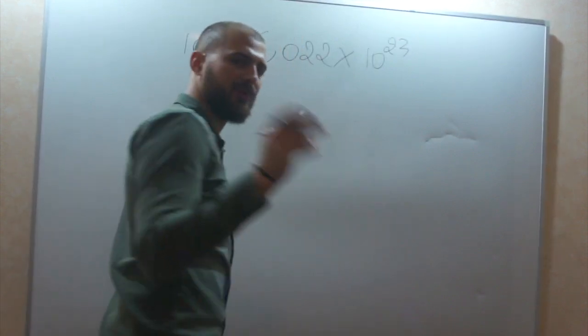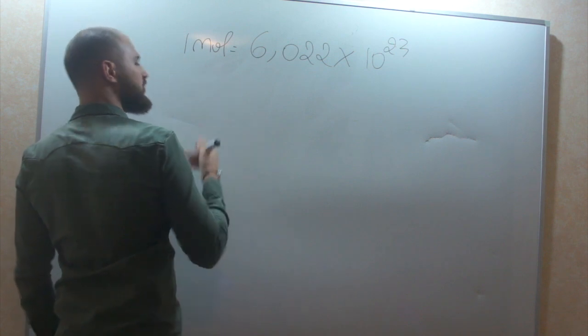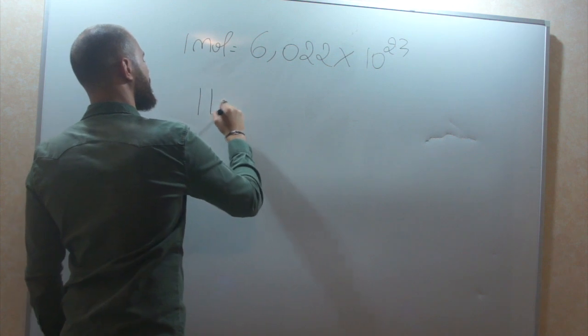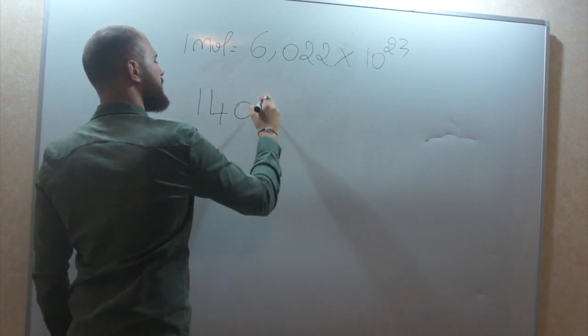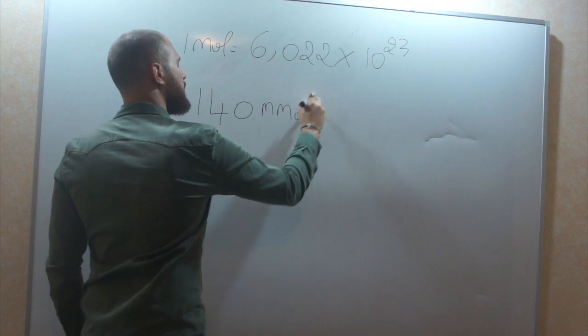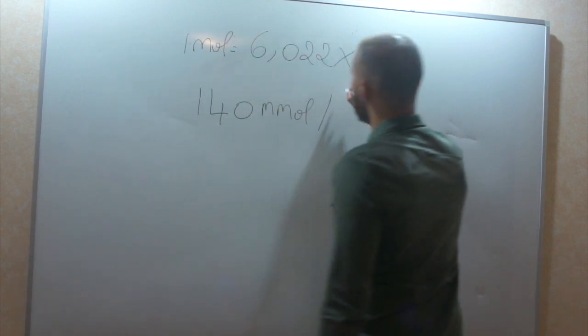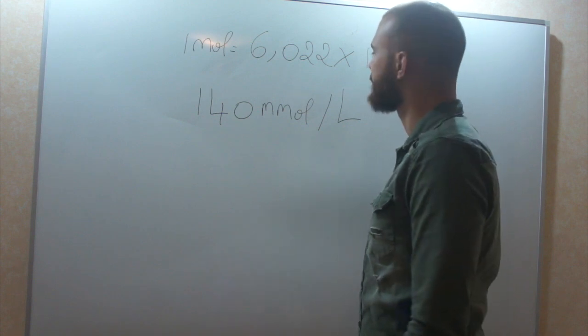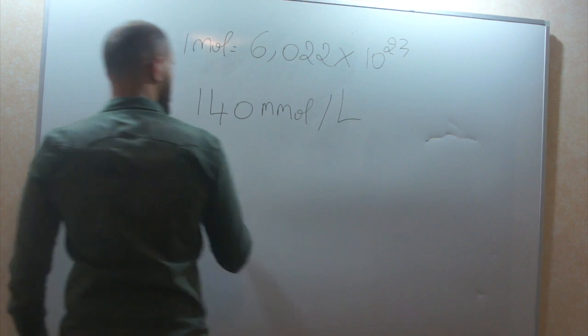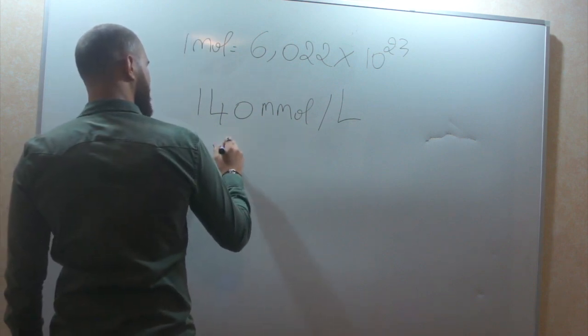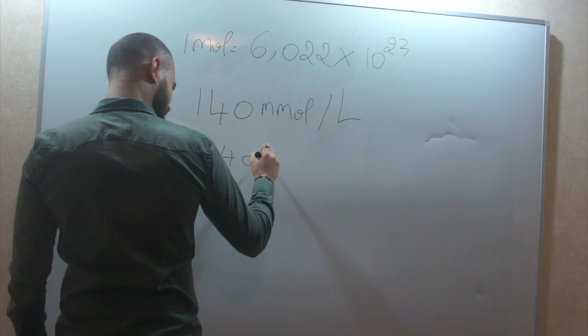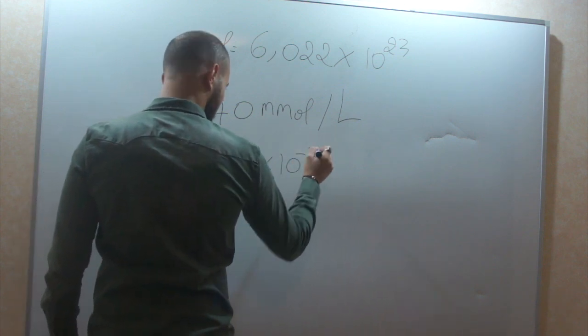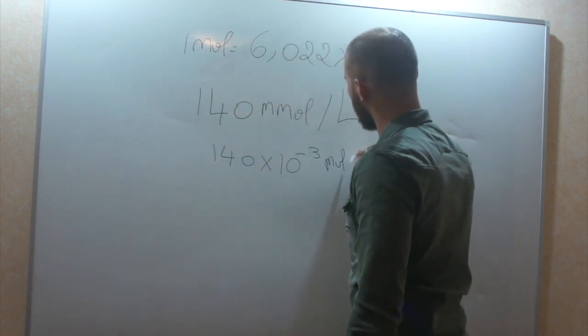I said in the previous video that the concentration of sodium in the blood is 140 millimole per liter. What if I want this in grams? How do I do? So, we have 140 millimole per liter. So, we have 140 multiplied by 10 to the power minus 3 mole per liter.